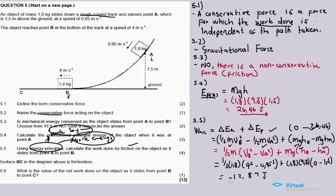Why is the answer negative? It's because the work done by friction is a negative value - it shows that the system is losing energy. If it's a positive value the system is gaining energy, but if it's negative we are losing energy. The negative answer tells us that friction is doing negative work.